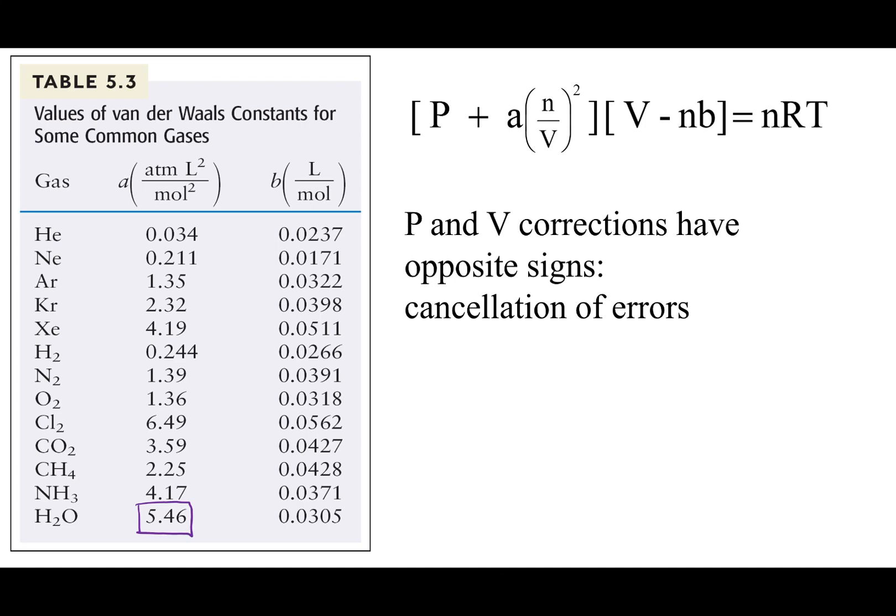And what you can see is water has a very high A term. It has one of the highest A terms in this whole list. And that's because water acts like a bar magnet. And this is in contrast to some of these lower noble gases, which have a very low A.